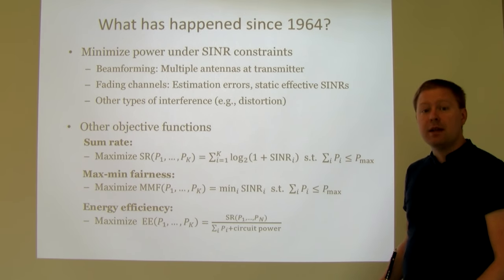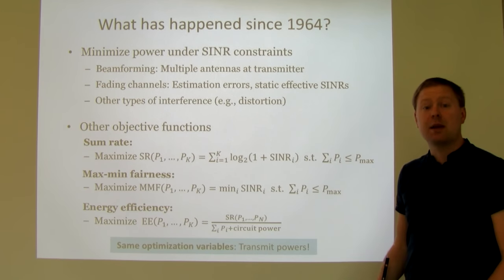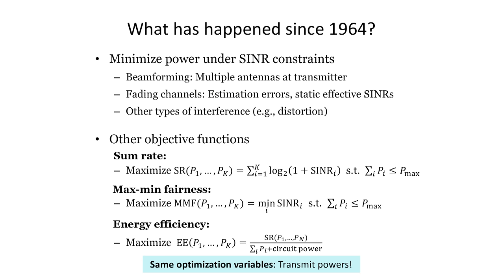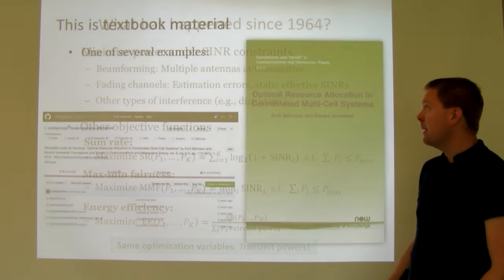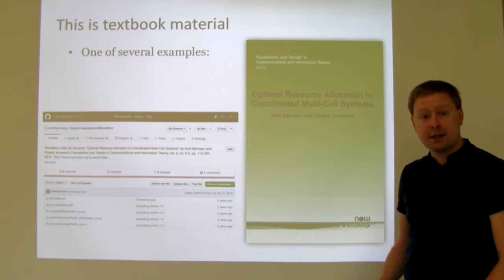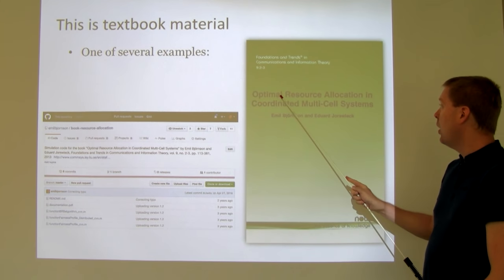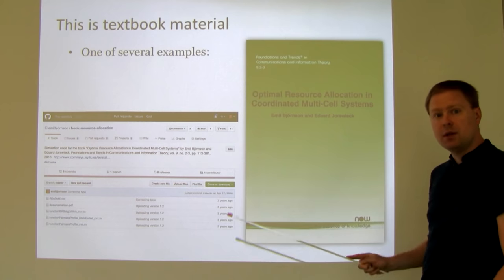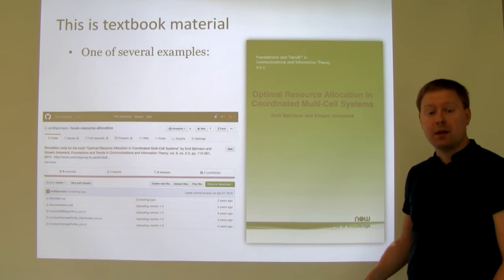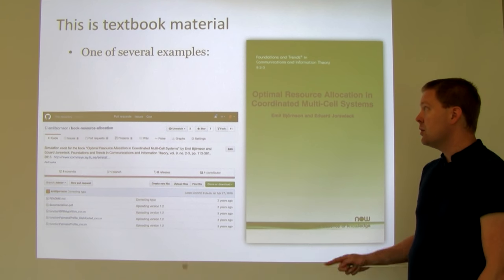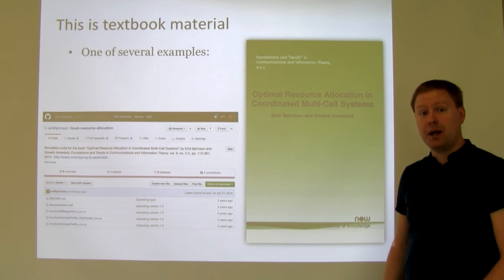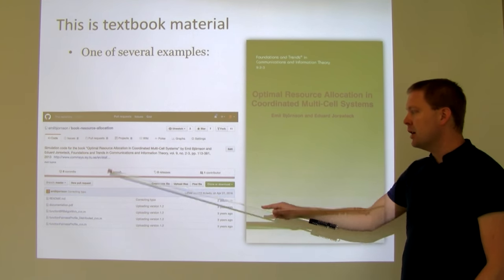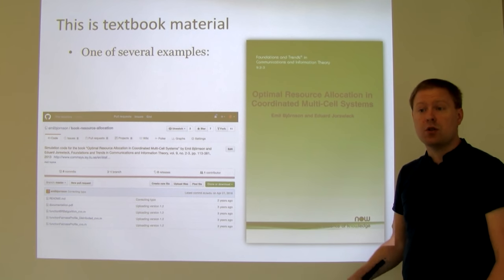One of the main characteristics of all these approaches is that they share the same optimization variables: the transmit powers. We now know quite well how to optimize wireless communications with respect to transmit powers — this is textbook material. I mention my own textbook, 'Optimal Resource Allocation in Coordinated Multi-Cell Systems,' written with Eduard Jorsvik, whose PDF you can download online for free. There is even simulation code on my GitHub page that solves many of these problems, so you don't need to implement things yourself.